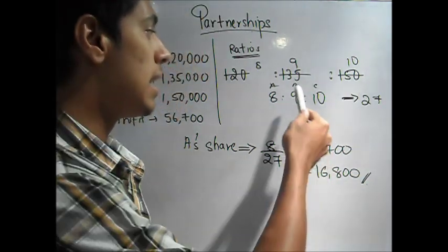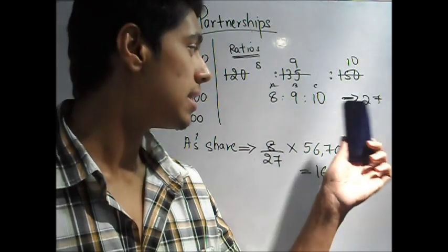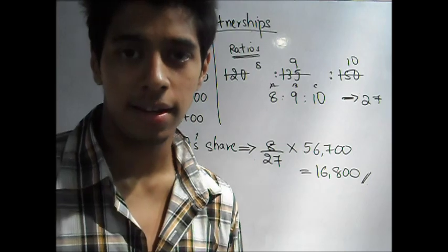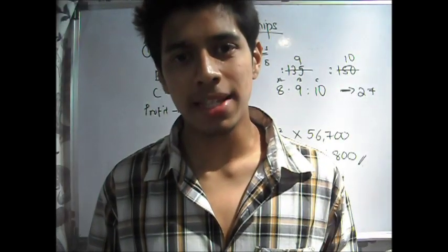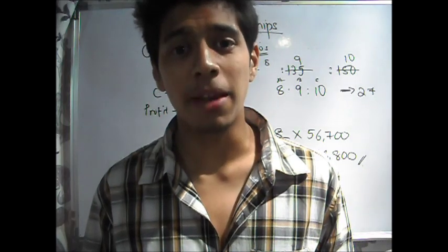Similarly, B's share will be 9 upon 27 into 56,700. And C, 10 by 27 into 56,700. This was part 1. We just saw the basics of partnership and we solved a simple problem. In the next video, I'll solve many more tougher problems.